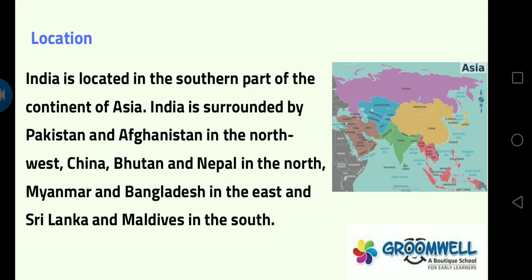India is located in the southern part of the continent of Asia, as we have read in the previous chapters about India in Asia. India is surrounded by Pakistan and Afghanistan in the north-west, China, Bhutan and Nepal in the north, Myanmar and Bangladesh in the east. You can see Pakistan and Afghanistan at the north-west side on the map of Asia in your books and on the screen.